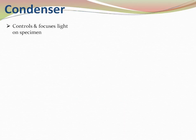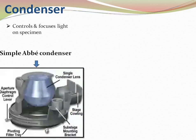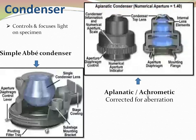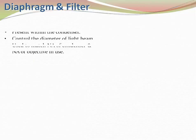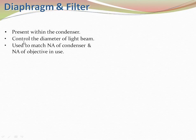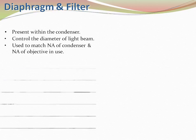The condenser's function is to control and focus the light on the specimen. There are two types: the simple condenser, which has a single lens with diaphragm control, and the achromatic or aplanatic condenser, which is a combination of lenses with a diaphragm and mounting thread. The diaphragm is present within the condenser and controls the diameter of the light beam. It is used to match the NA of the condenser and the NA of the objective.